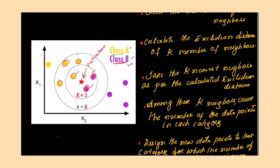This shows the significance of selecting the K value properly. When K equal to 3, the test instance is predicted as class B; when K equal to 6, it is predicted as class A. Selecting the value of K is a very challenging job in machine learning. In numerical problems, K is given, making computation straightforward, but in real project work you need to select K appropriately.